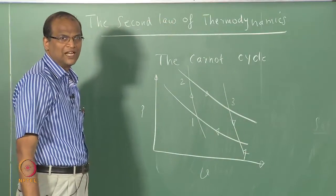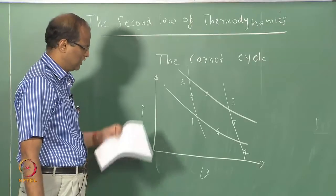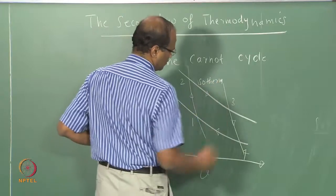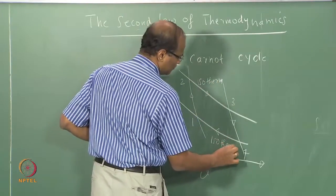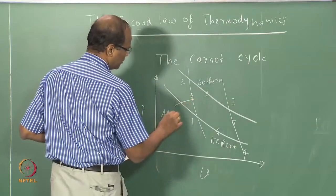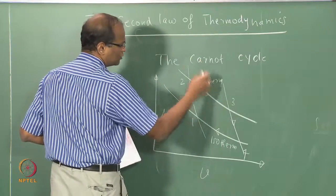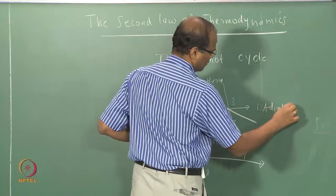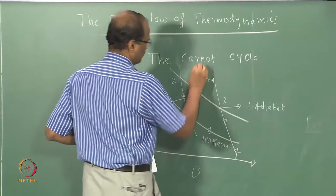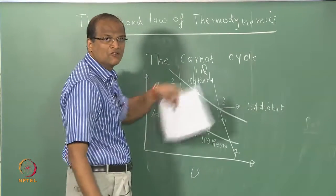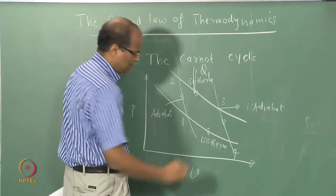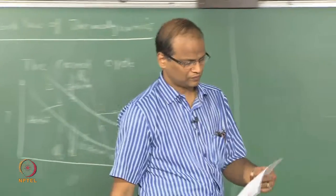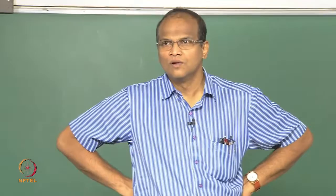Consider a cycle consisting of 4 processes: 1, 2, 3, and 4. Process 2-3 is an isotherm, process 4-1 is an isotherm, process 1-2 is an adiabat — meaning no heat transfer. An isotherm is a constant temperature process. There is an isothermal heat addition Q1 into the cycle in process 2-3, and there is an isothermal heat rejection Q2.